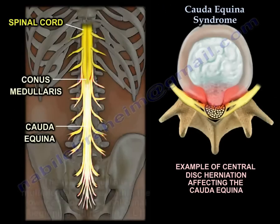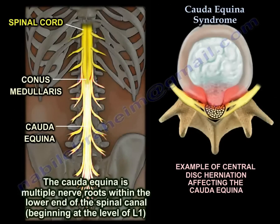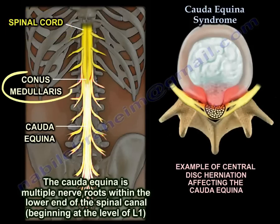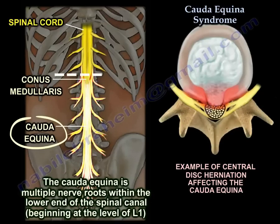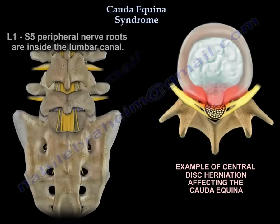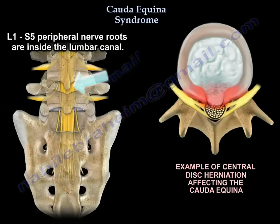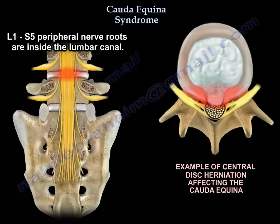Cauda Equina is multiple nerve roots within the lower end of the spinal canal. You can see in this diagram that the spinal cord is up, followed by the conus medullaris at the lower end of the spinal cord, and the Cauda Equina as multiple nerve roots beginning at the level of L1. The L1 to S5 peripheral nerve roots are inside the lumbar canal.